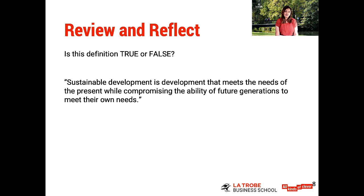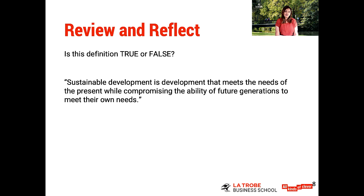Now that we're done with the first topic, let's take some time to review and reflect. Is the following definition true or false? 'Sustainable development is development that meets the needs of the present while compromising the ability of future generations to meet their own needs.' It is, of course, false — because the key is that it does not compromise the ability for future generations to meet their own needs.